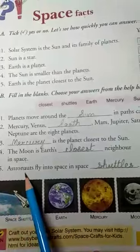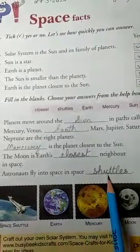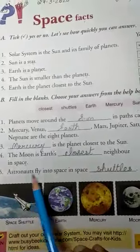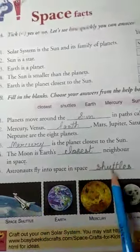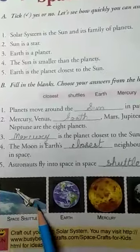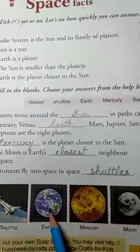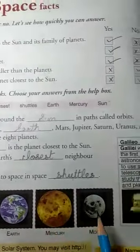Number five: Astronauts fly into space in space shuttles. So the aircrafts which the astronauts use to fly in space are called the space shuttles. See the picture of the space shuttle given here. This is the aircraft for the astronauts to fly into space. This is the picture of the Earth. This is Mercury and this is the moon.